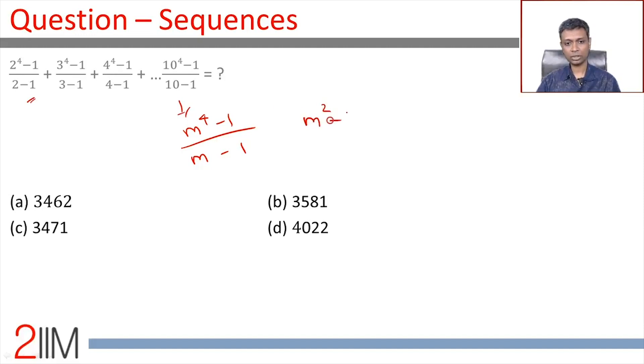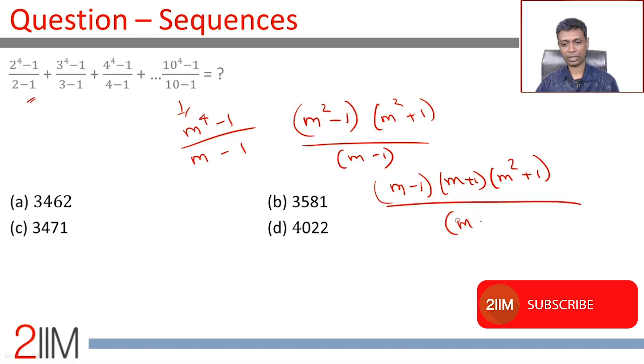m^4-1 is (m^2-1)(m^2+1) divided by m-1, or this is (m-1)(m+1)(m^2+1)/(m-1).